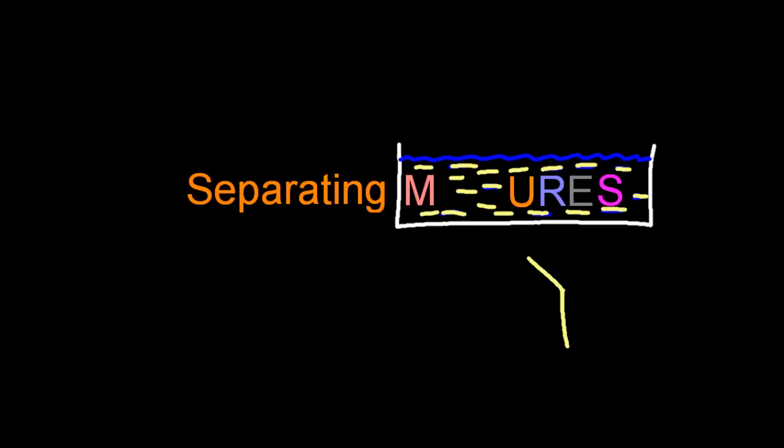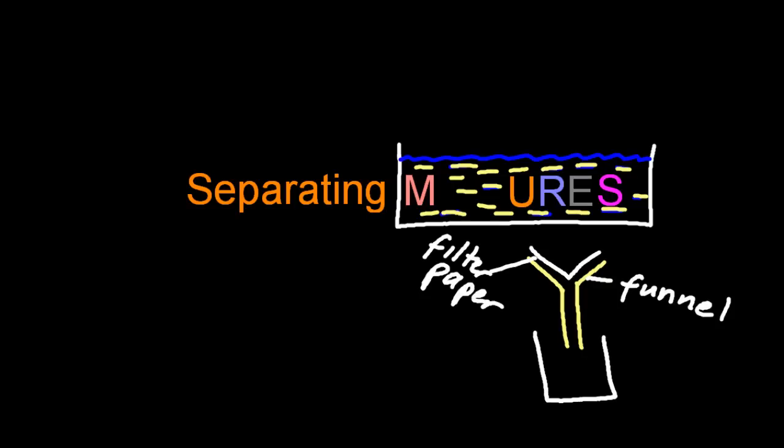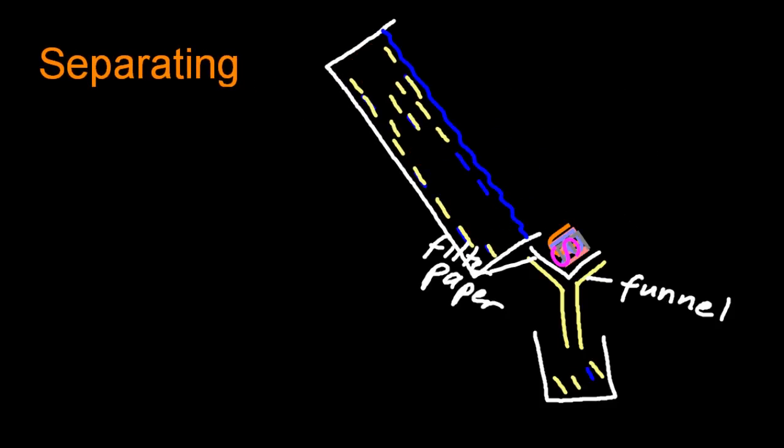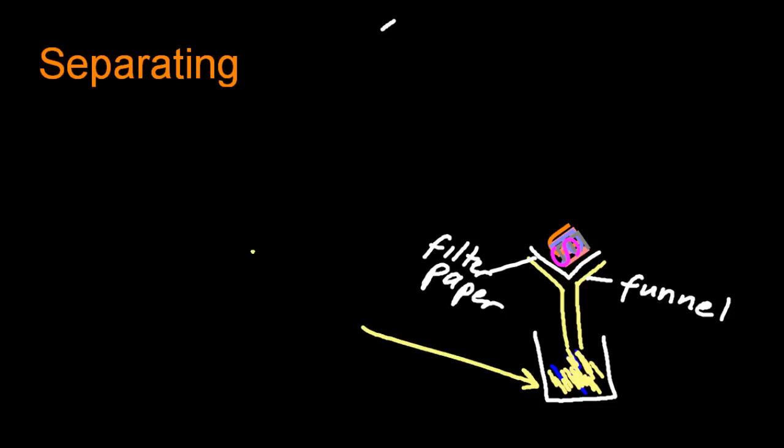That might be polystyrene, so that's floated up and we can remove that. So how can I separate? That's it - filter funnel and some filter paper. Pour the mixture in and the water will go through, retaining the insoluble chemicals. Then the question is how do you get the solute out? Just evaporate off the water.